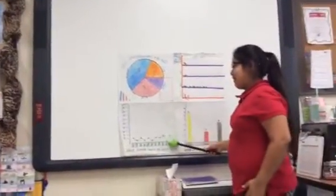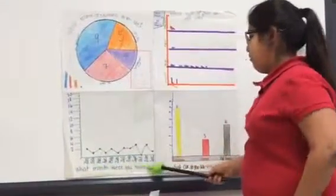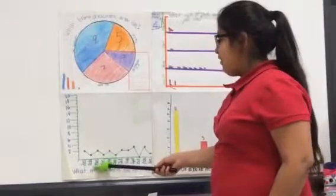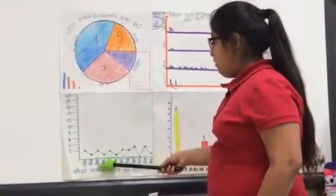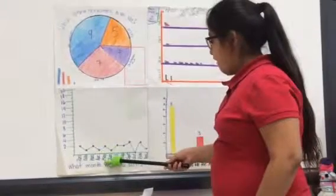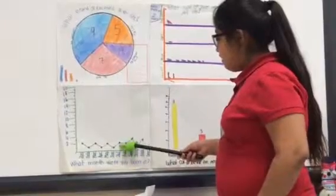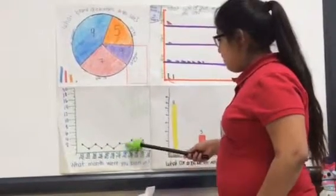Last we have the line graph. The line graph question is what month were you born in? January got 2. February got 1. March 2. April 1. May 2. June 1. July 2. August 2.